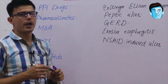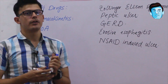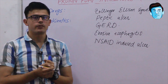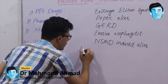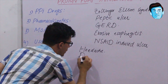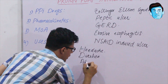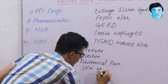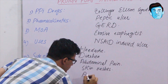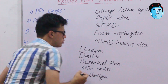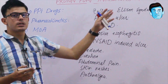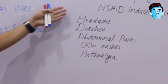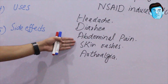There are very few side effects of PPI — minimal side effects — but certain side effects include headache, diarrhea, abdominal pain, skin rashes, and arthralgia. These are not severe side effects, but they can be exhibited by patients taking PPI.